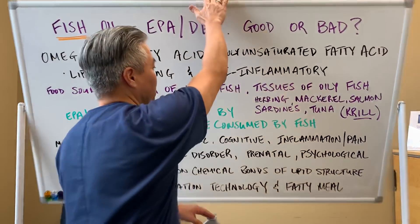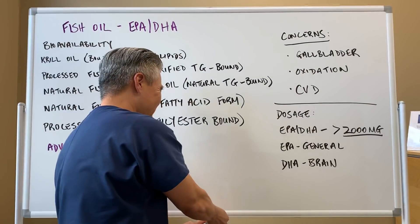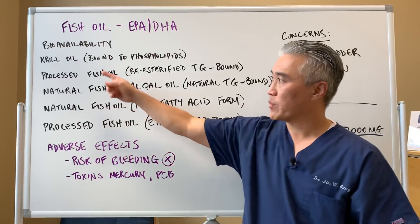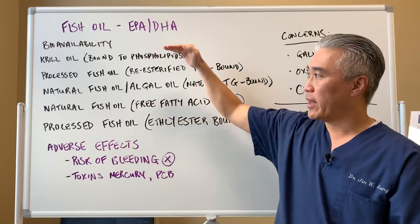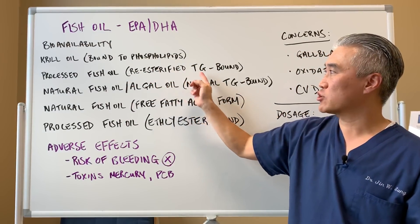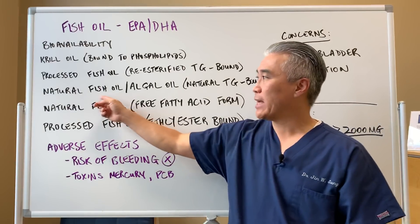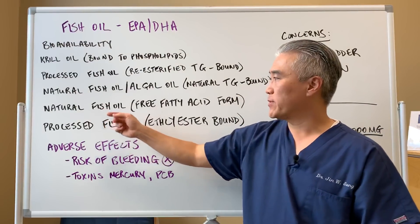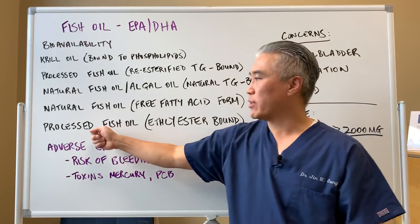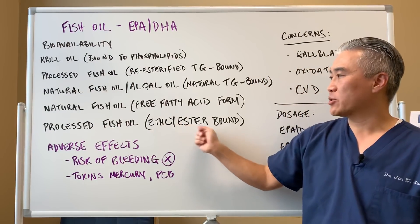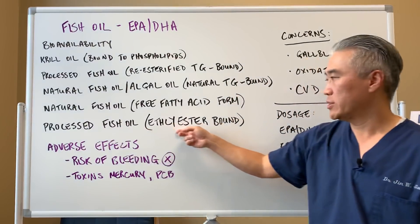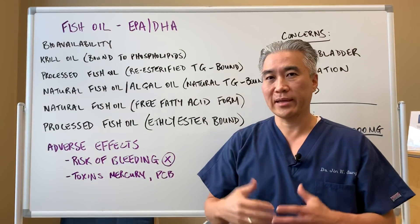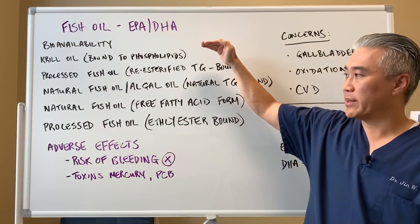Fish oil comes in a variety of different forms. From highest to lowest bioavailability: krill oil bound to phospholipids; then processed fish oil that's re-esterified to triglyceride bound; then natural fish oil or algae oil in natural triglyceride form; then natural fish oil in free fatty acid form; and finally processed fish oil in ethyl ester form. The ethyl ester form is used by pharmaceutical companies because they can patent it, but its bioavailability is the lowest on the list.